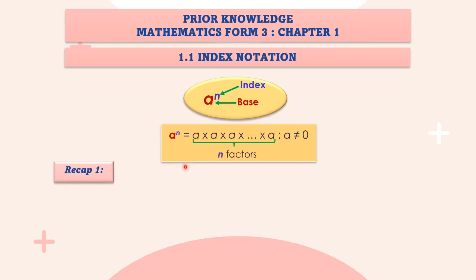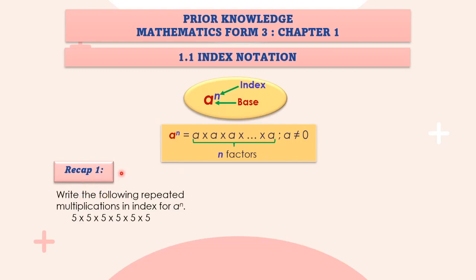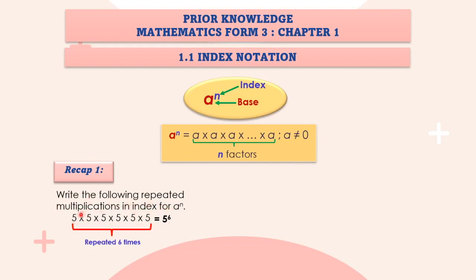Recap one: write the following repeated multiplication in index notation. We have five multiplied by itself — let's count: one, two, three, four, five, six — six times. So how do we write it in index notation? It is five to the power of six. Instead of writing it as repeated multiplication, we write it as five to the power of six. This applies to all integers, whole numbers, decimals, and fractions.